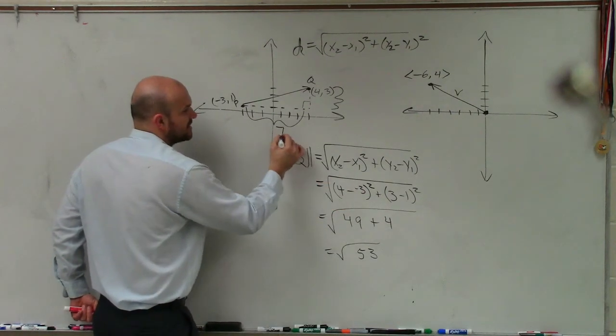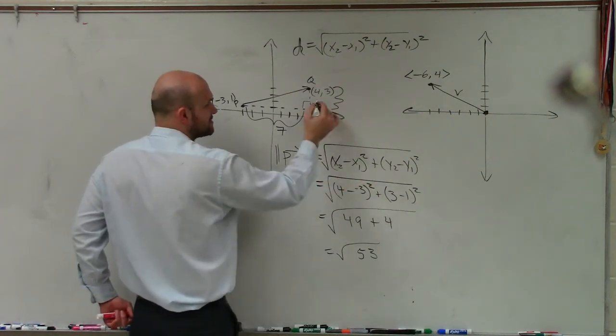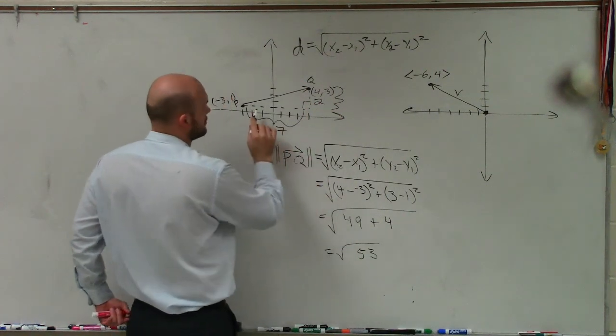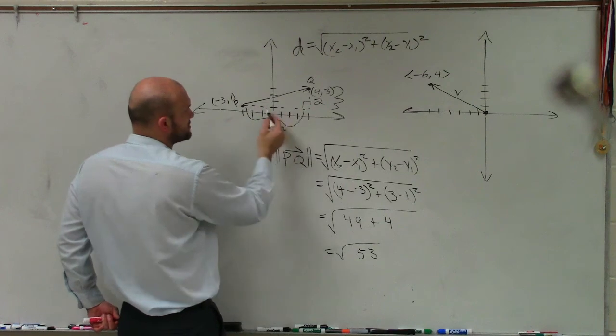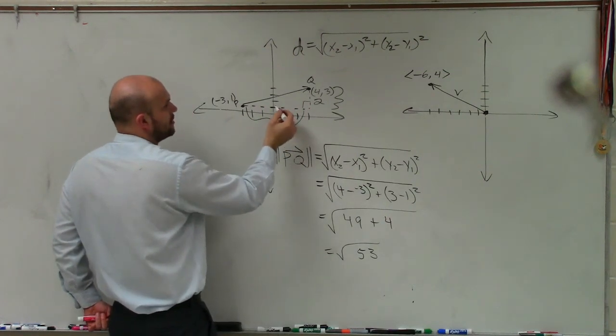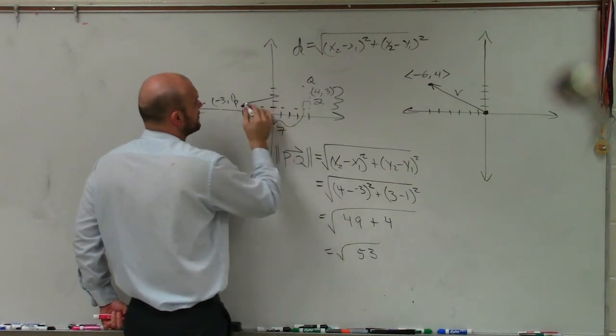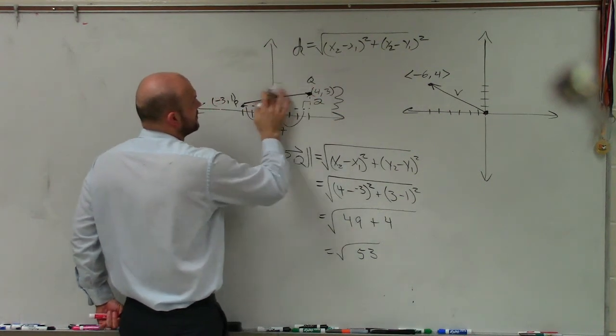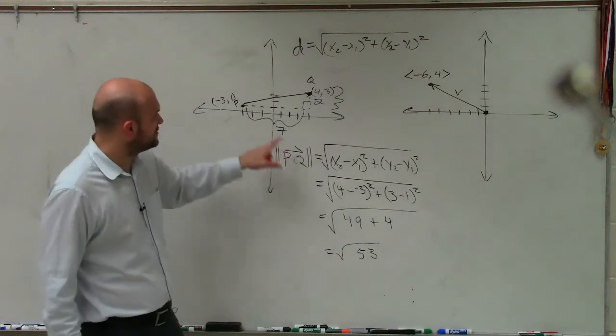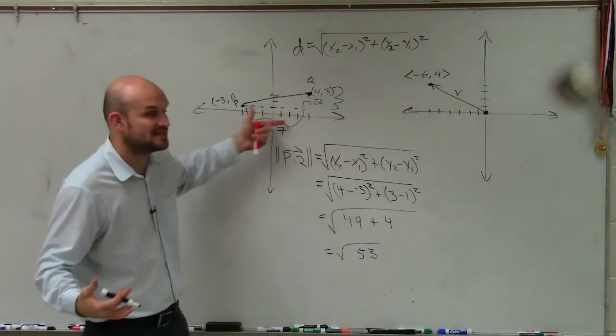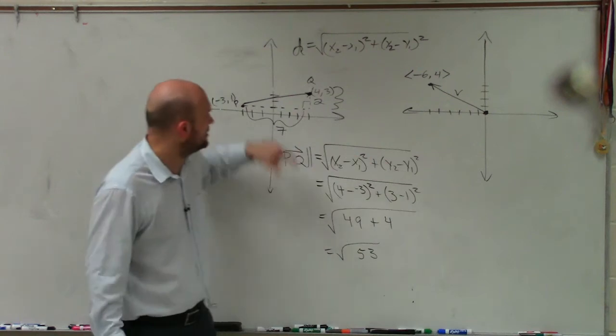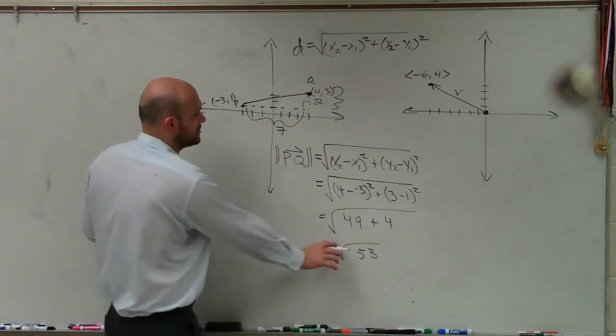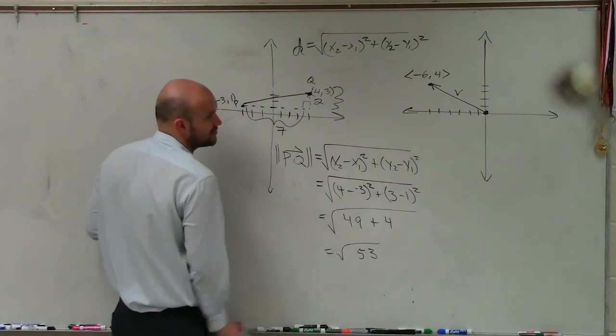So pretty much what we're saying is this length, 4 minus negative 3 is 7. And we're saying this length is 2. So that length is 2, that length is 7. And obviously, once you know 7 and 2, which is the difference here, then you apply the Pythagorean theorem to find your hypotenuse. So therefore, the magnitude in this case is going to be the square root of 53.